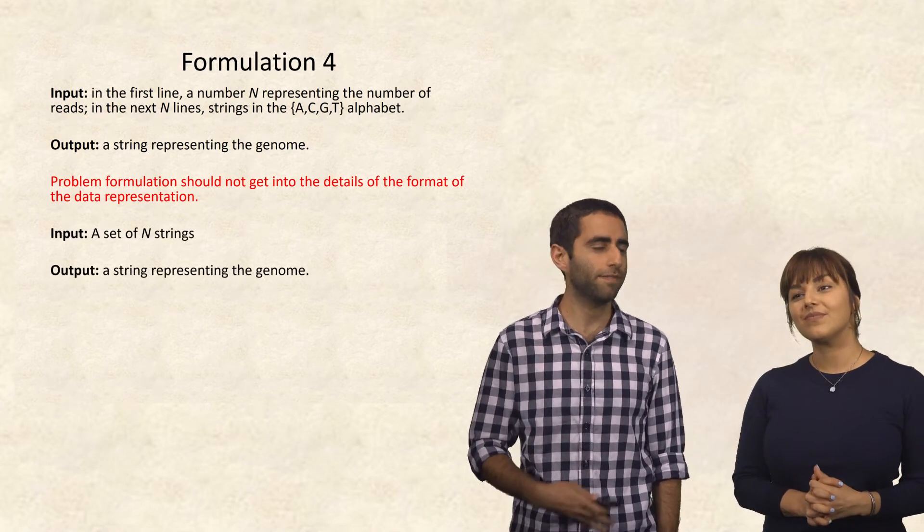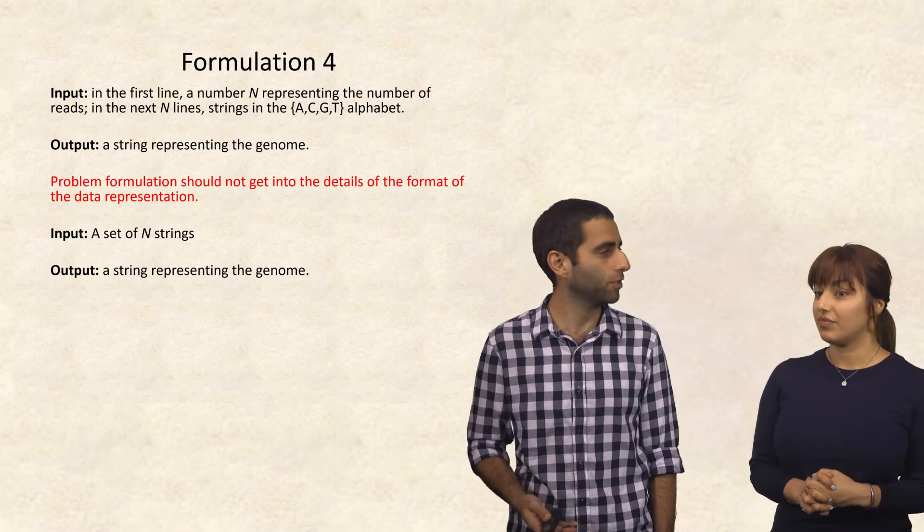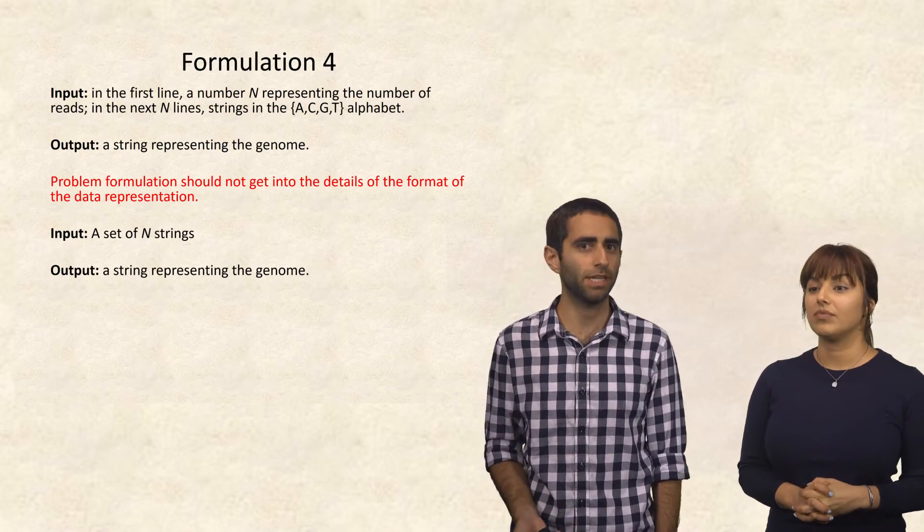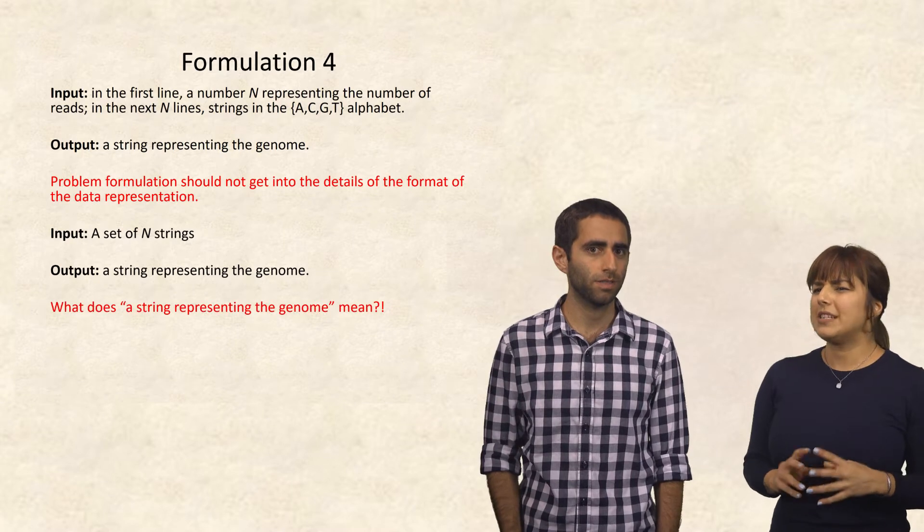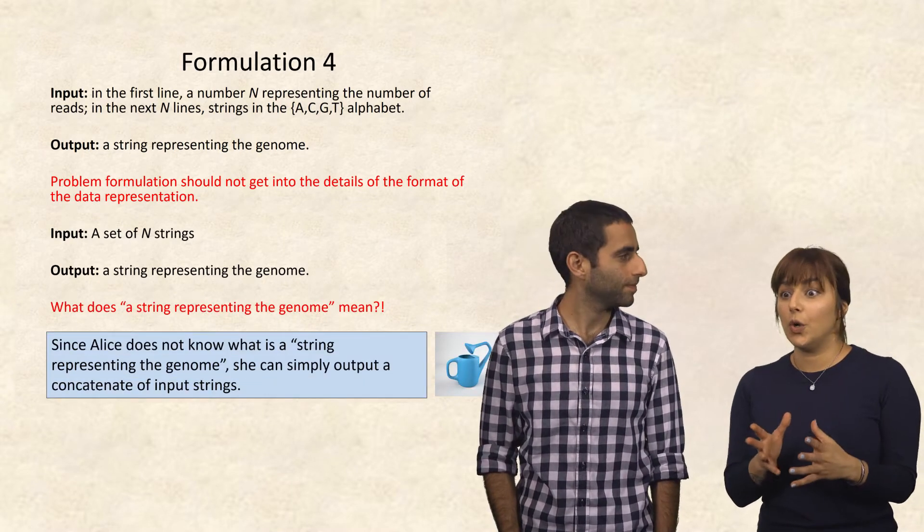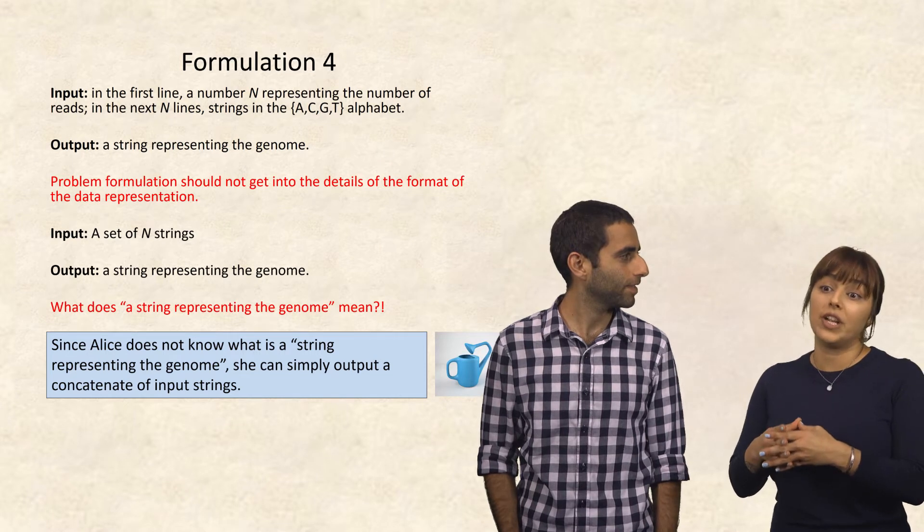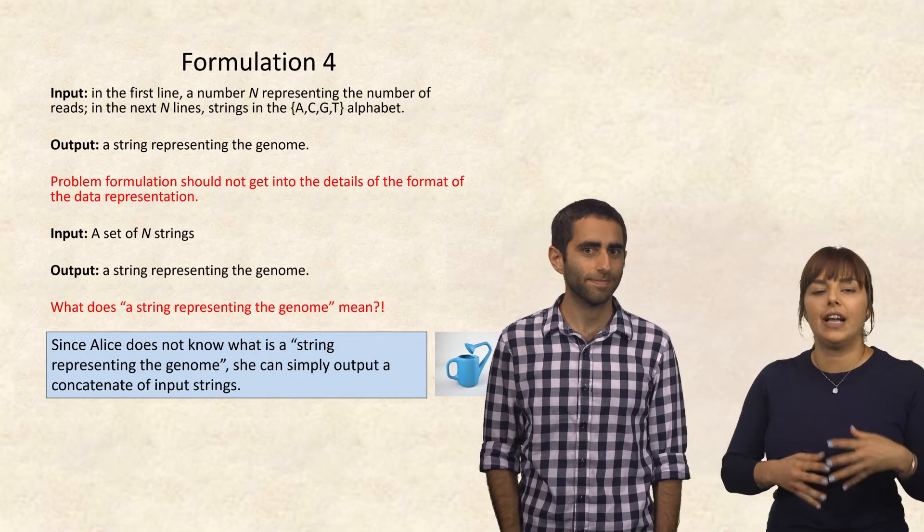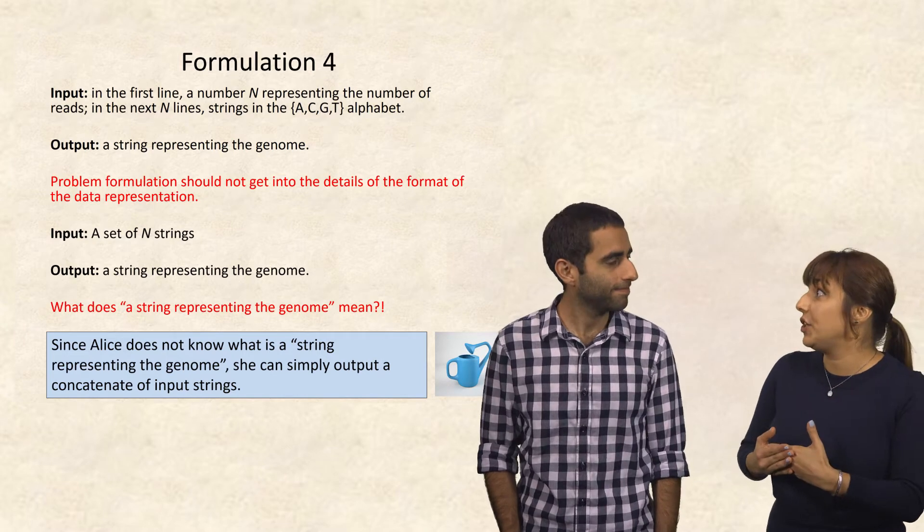So what about then if I rephrase it and said that the input is just some set of n strings, and the output is a string representing the genome? What does it mean, a string representing the genome? Since Alice does not know what you mean by the phrase, the string representing the genome, she can simply output a concatenate of the input strings to you.